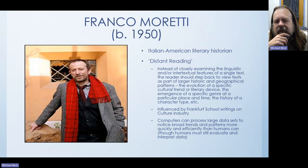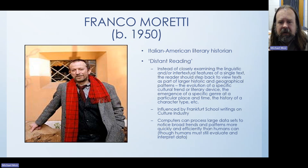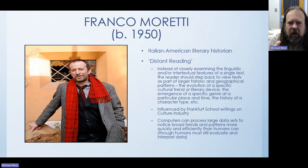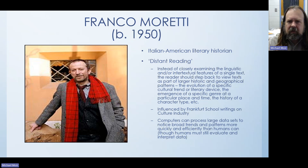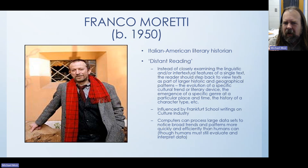Moretti's basic method is based on the fact that computers are able to process large data sets to notice broad trends and patterns much more quickly and efficiently than human beings can — though human beings must still evaluate and interpret the data. We used a computer and quantitative methods to produce the data about where Hollywood films are popular and where they are not, but one still needs to apply human interpretive practices to make some kind of meaning out of that data. The computer is not going to do that for you, and that is one thing people often misunderstand about digital humanities methods.